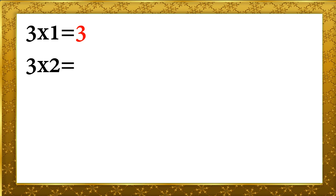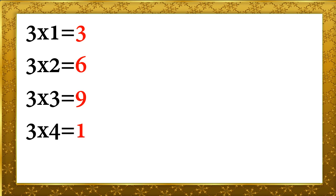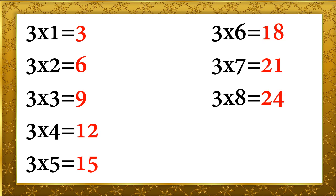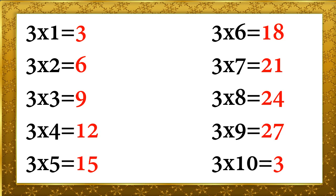3 ones are 3, 3 twos are 6, 3 threes are 9, 3 fours are 12, 3 fives are 15, 3 sixes are 18, 3 sevens are 21, 3 eights are 24, 3 nines are 27, 3 tens are 30.